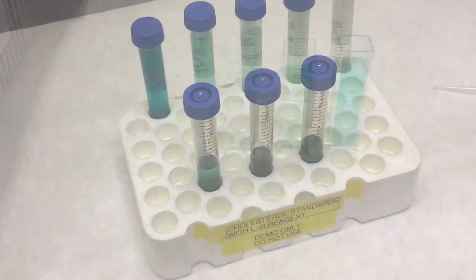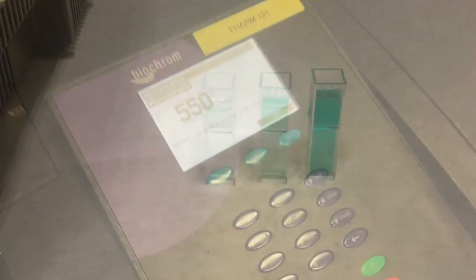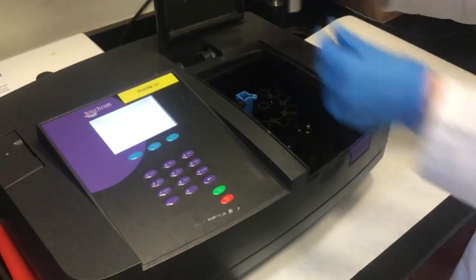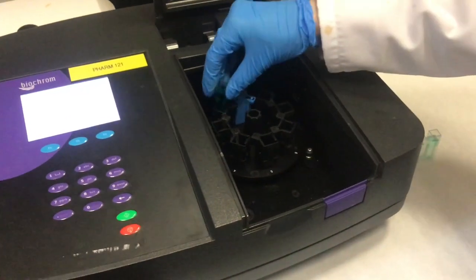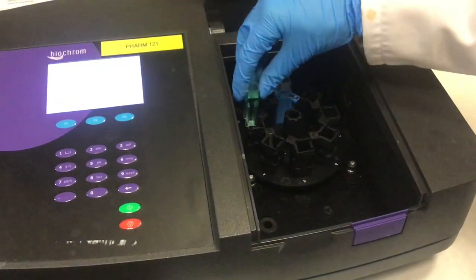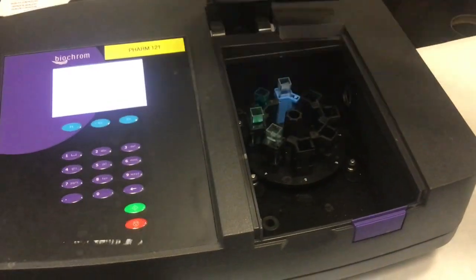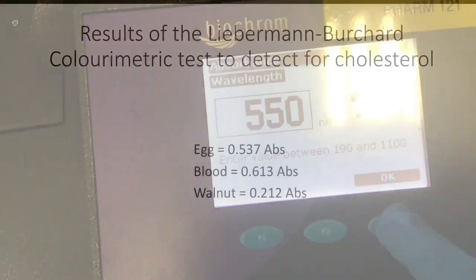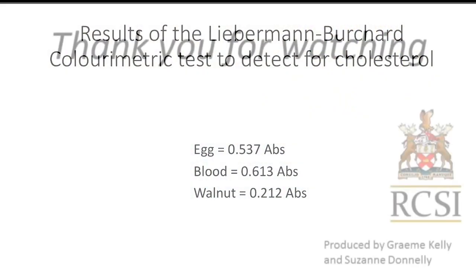The three samples are then transferred into cuvettes and will be run on the UV-VIS photospectrometer. Chloroform is used as a reference, and the samples are run at 550 nanometers. You can determine the concentration of your samples by inserting the absorbance values into your standard curve.